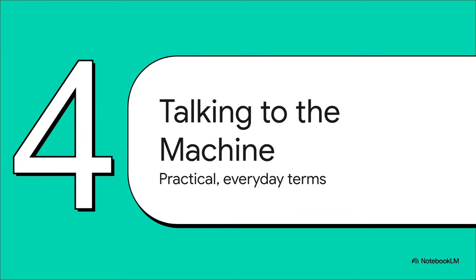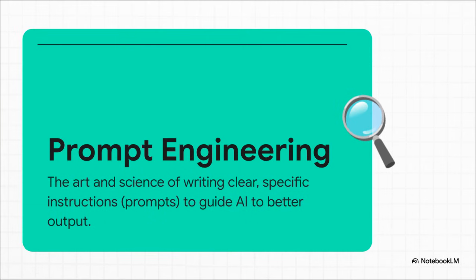Let's get really practical now. This next set of terms is what you're going to run into when you actually use these AI tools, and understanding these is the key to getting great results. First up, prompt engineering — probably the single most important skill for using AI effectively right now. It's the art and science of writing clear, specific instructions, your prompts, to get exactly what you want out of the AI. A good prompt is like asking a really precise question. A bad one is just mumbling and hoping for the best.